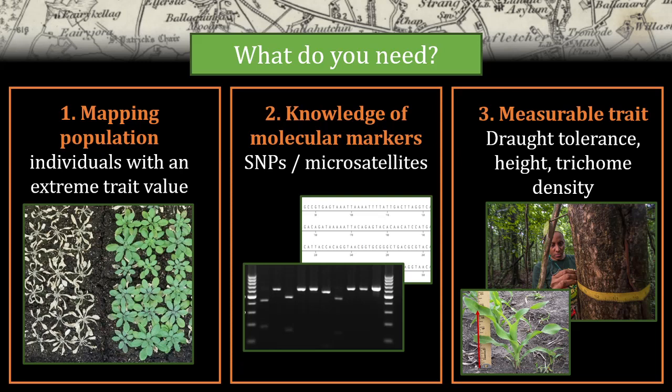What do you need for QTL mapping? There are three basic things: first, a mapping population; second, a knowledge of molecular markers; and third, a measurable trait. We'll discuss them sequentially so you can put this together and see how this approach works.